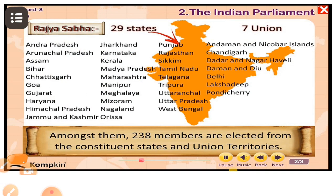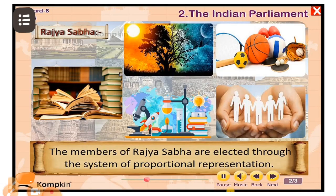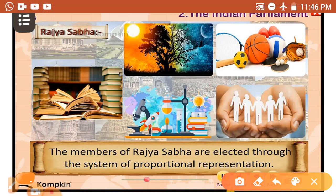The remaining 12 members are appointed by the president. These members are usually experienced and distinguished personalities from the fields of literature, arts, sports, science, and social work.